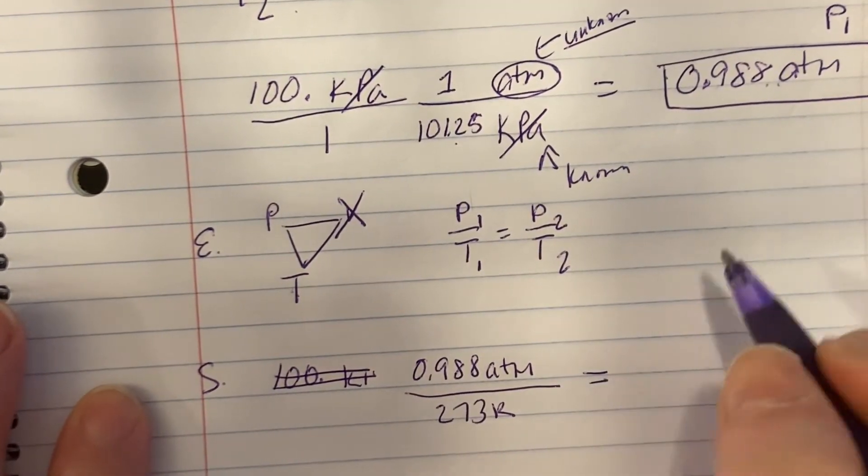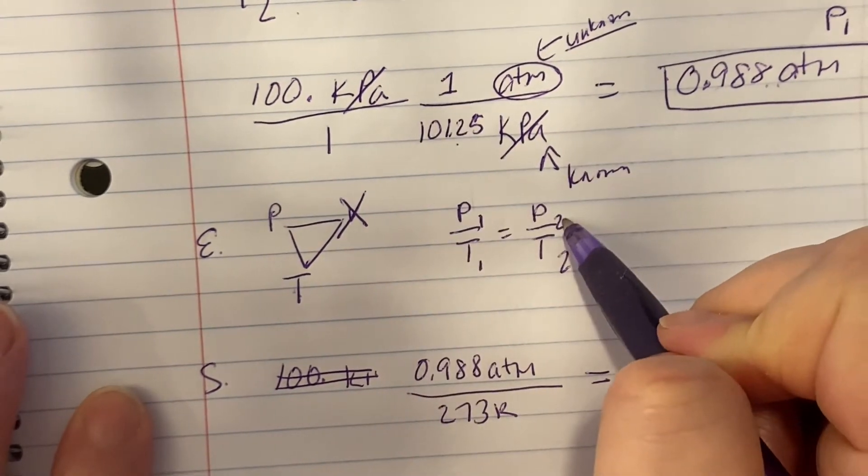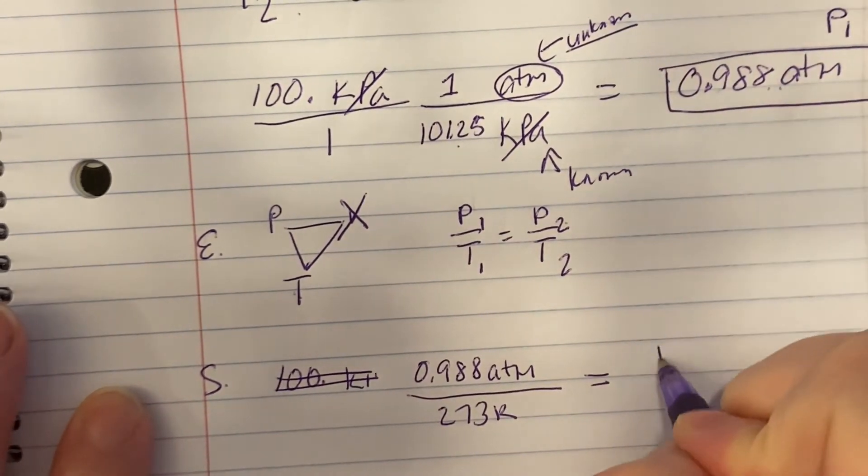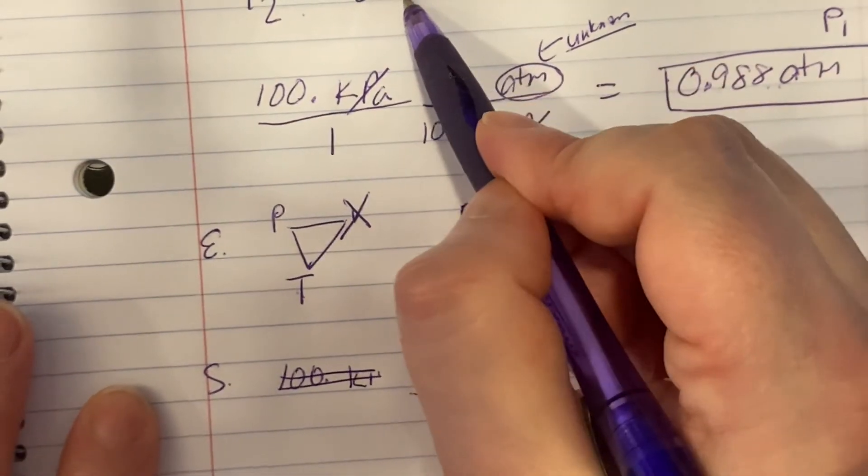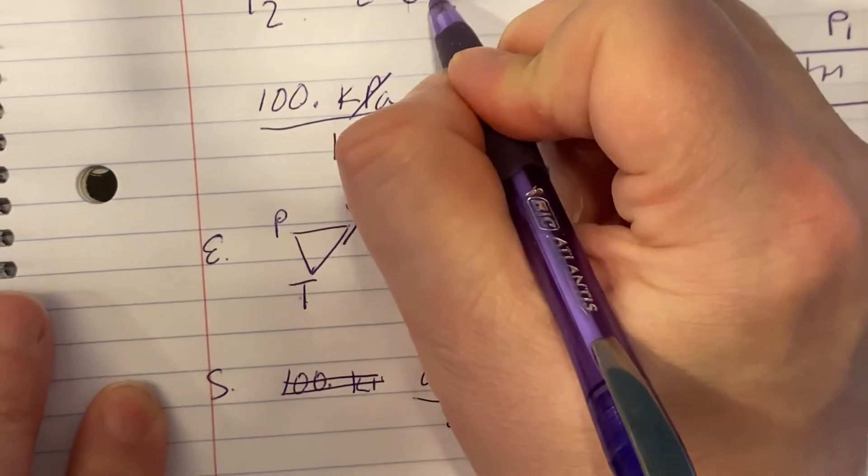0.988 atmospheres is my P1 over my temperature 1 is 273 K. And that equals my pressure 2, which I'm looking for, so just P2, over temperature 2. Oh, my temperature 2 also has an issue, doesn't it? It's not in Kelvin.